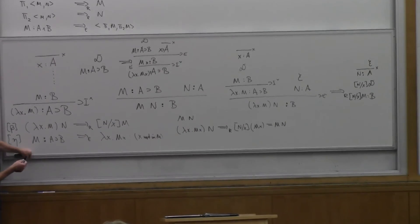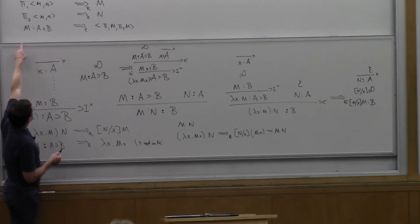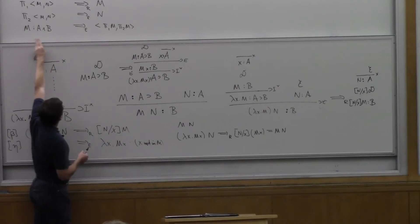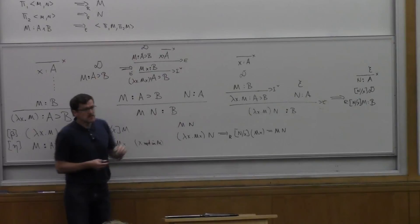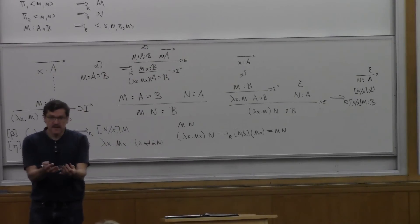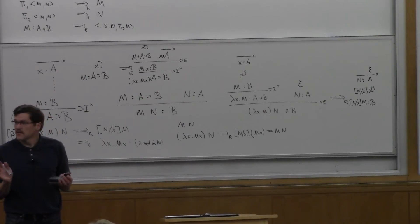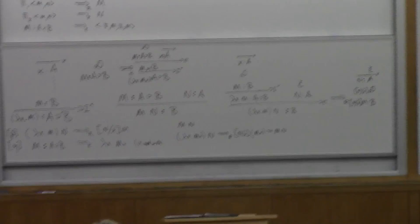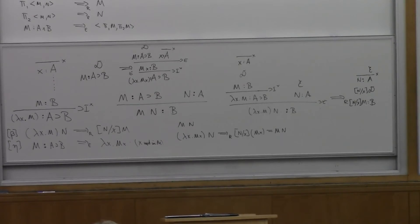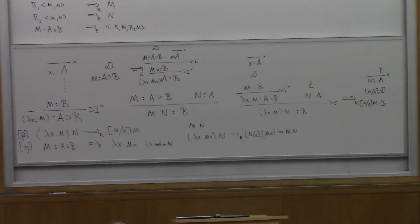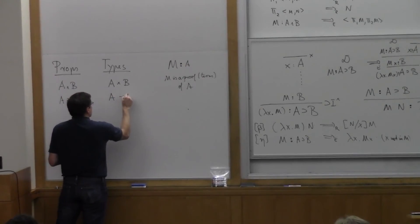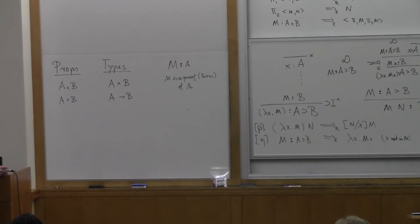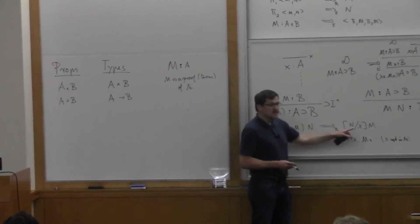We can compare these two rules. Beta reduces lambda X M applied to N to N substituted for X in M. Eta says M expands to lambda X, M applied to X. These two functions are equal because applying M to an arbitrary argument N, or applying lambda X M of X to N, both reduce to M applied to N. So those two functions should be considered equal because whenever you apply them, you get the same answer — that's extensionality. And similarly for pairs with the projections.